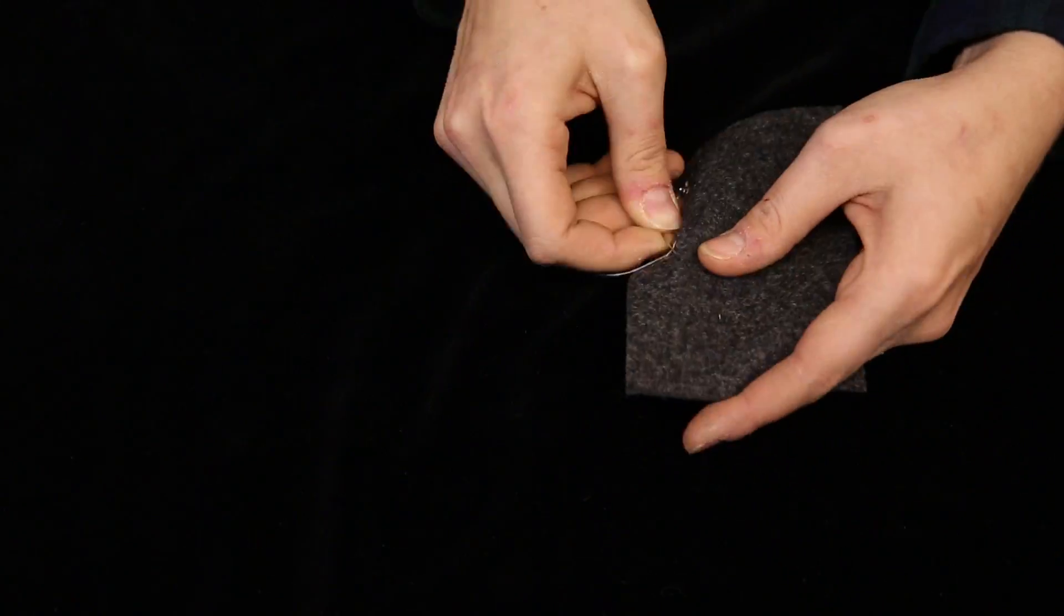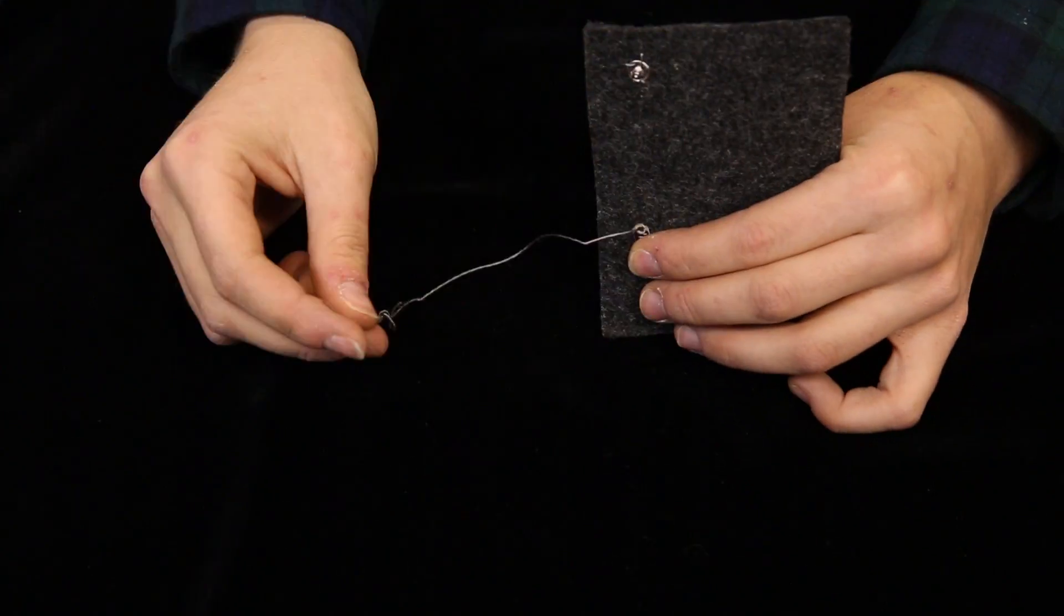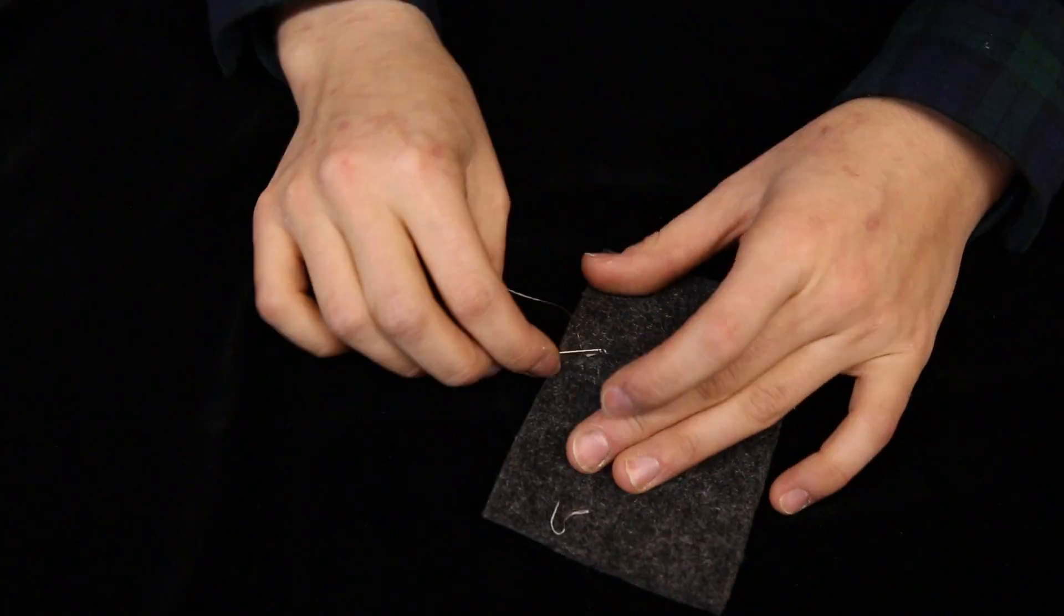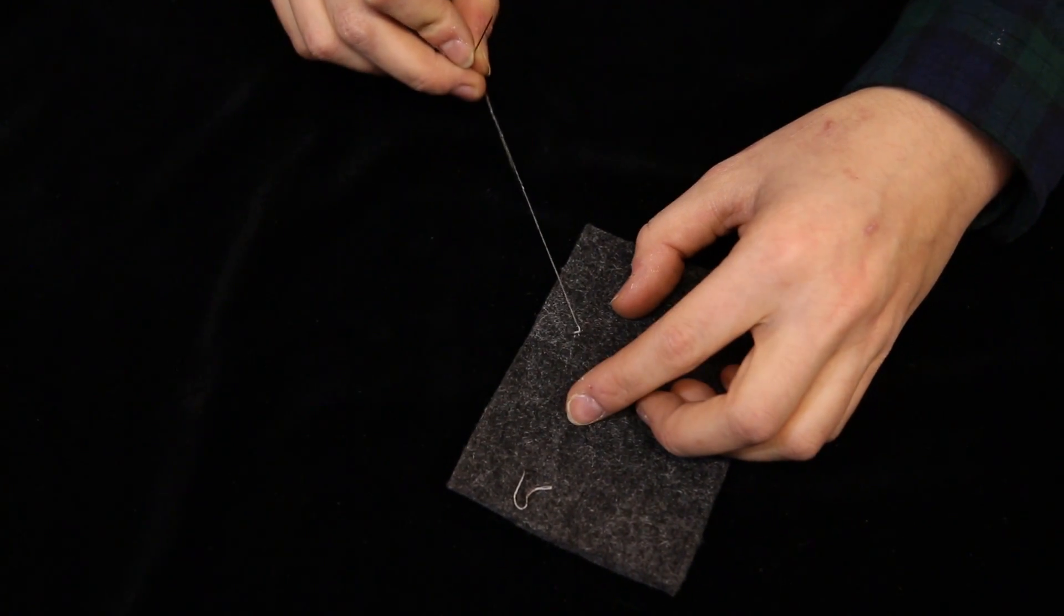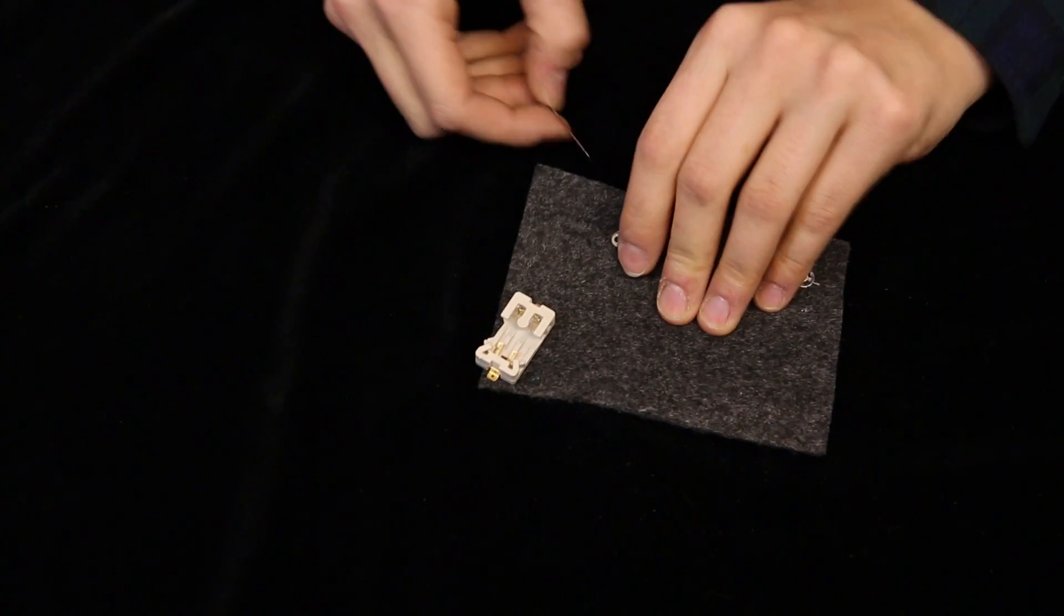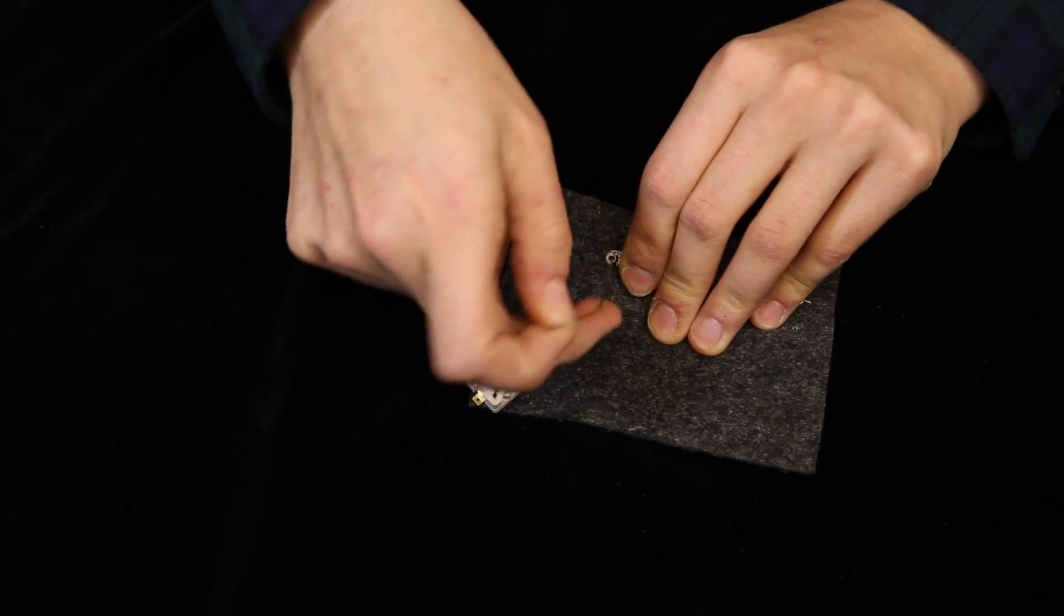With the same piece of thread, connect it to the cathode of the lily pad sewable LED using the running stitch and tie it off. Connect the LED anode to the positive lead of the coin cell battery holder.